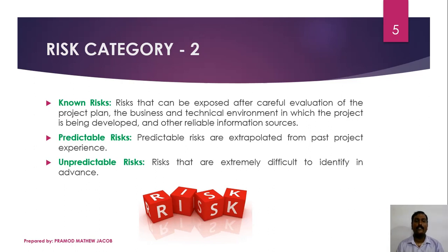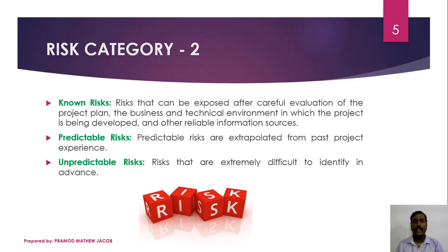The second classification of risk covers known risk, predictable risk, and unpredictable risk. Known risks are those which can be exposed after careful evaluation of the project plan, the business and technical environment in which the project is being developed, and other reliable information sources. When we are receiving user requirements and the system design, an experienced developer or project manager can identify some sort of risk - those are called known risks. If a project manager can identify some risks from previous project experience, those are categorized as predictable risks.